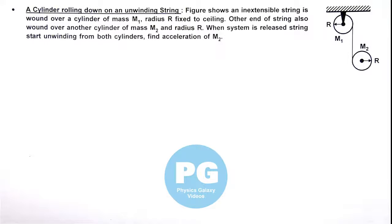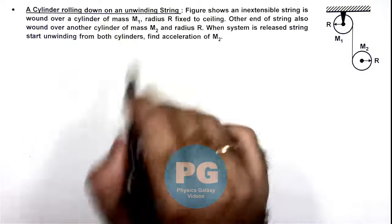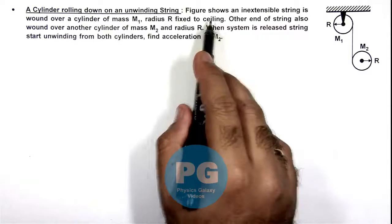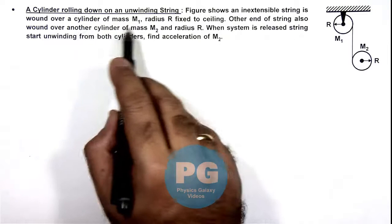In this illustration we'll analyze a cylinder rolling down on an unwinding string. The figure shows an inextensible string wound over a cylinder of mass m1.